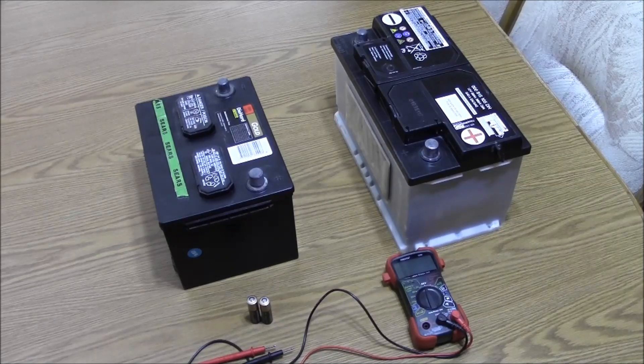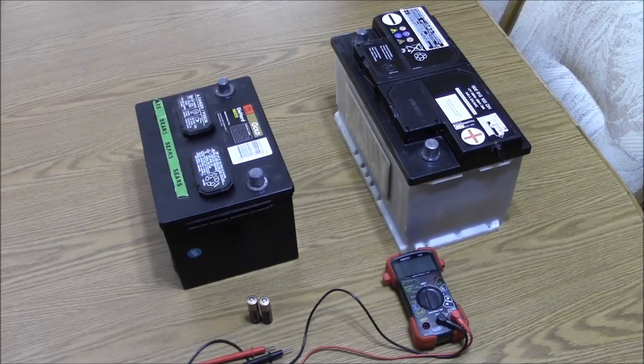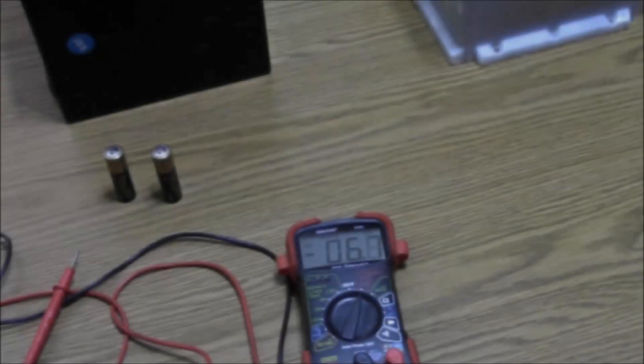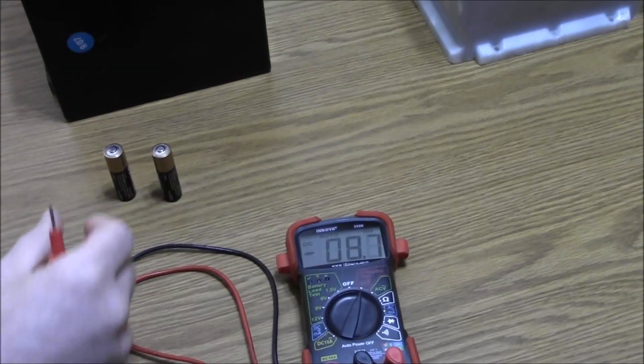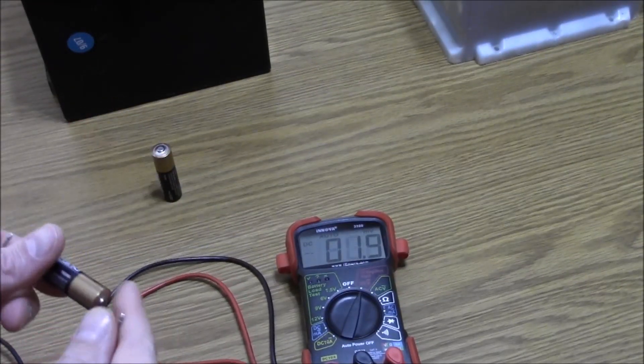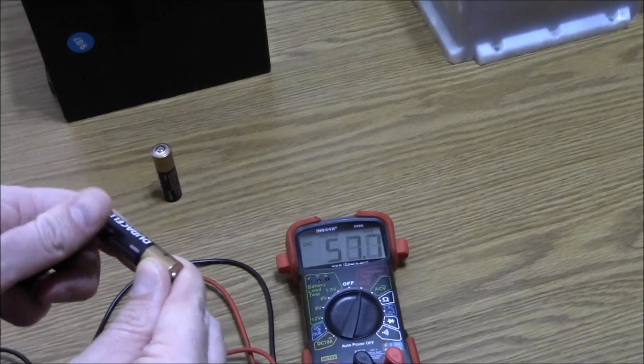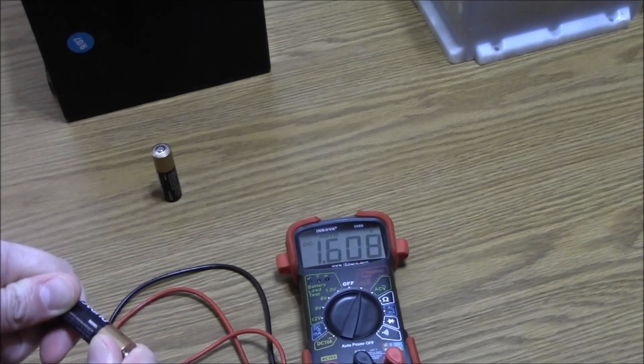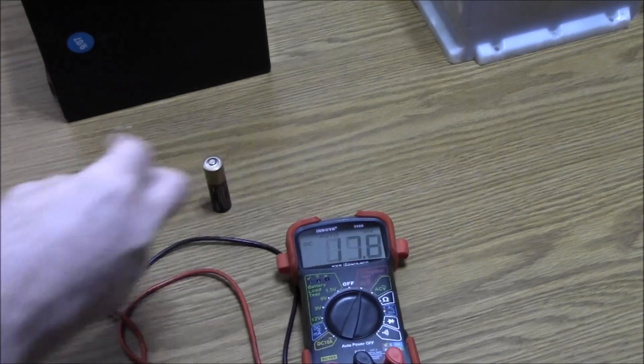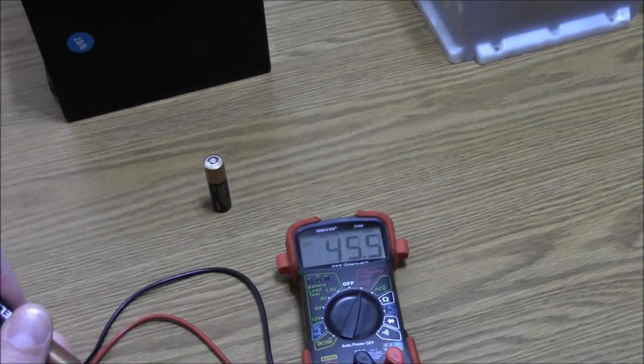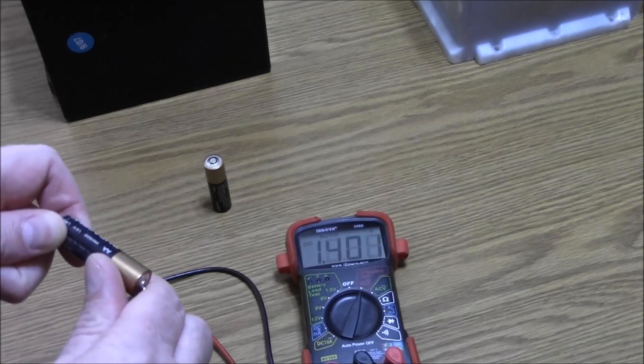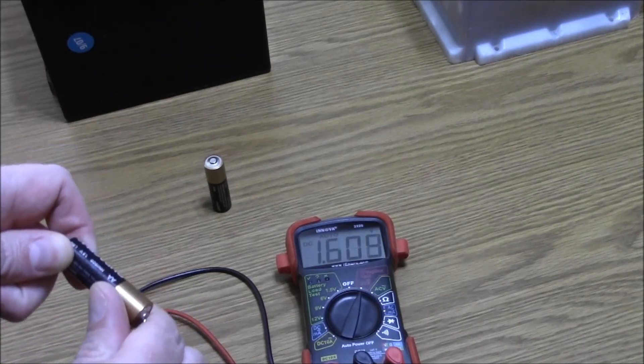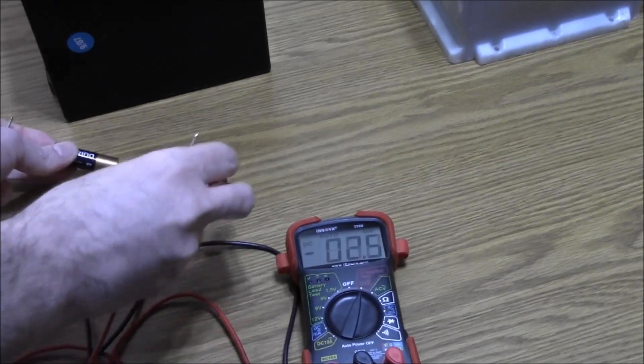We'll use an example of a couple of AA batteries to show you. To demonstrate the difference of series and parallel, I'm going to take two AA batteries. A AA battery is usually 1.5 volts. As you can see, this battery is 1.6, brand new and fully charged. I've got another one here, same thing, 1.6.